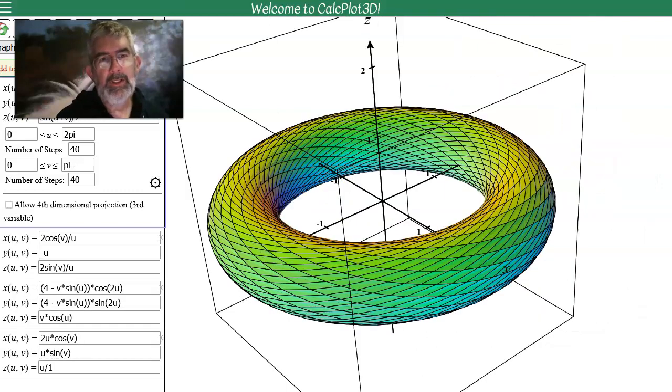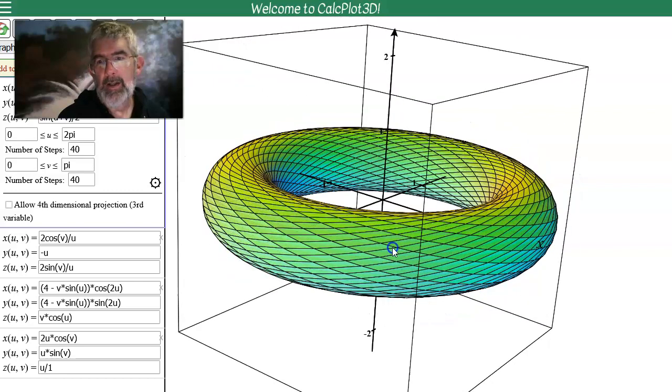Another example would be a torus. This is an orientable surface in that you could have all the outward normals or you could have all the inward normals.